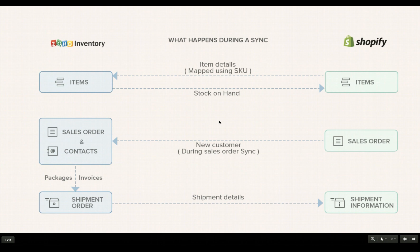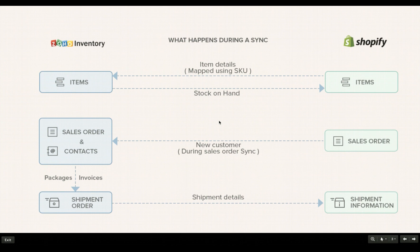Let me give you a quick overview on how the integration actually works. When you integrate your Shopify store with Zoho Inventory, we will bring the items from your Shopify store into Zoho Inventory, and if the items are already present in the Zoho Inventory organization, we will map them together based on the item name. From there, the stock information from Zoho Inventory will be pushed to your Shopify store. Once the item sync is done, any new order placed in your Shopify store will be fetched into Zoho Inventory along with its contact, and from there you can create invoices and packages within Zoho Inventory, and the shipment details will then be pushed back to your Shopify store.